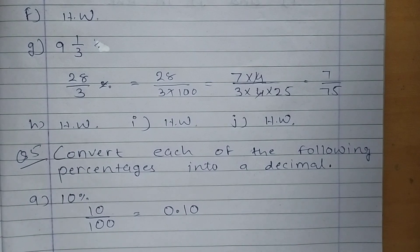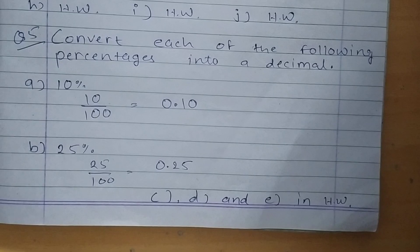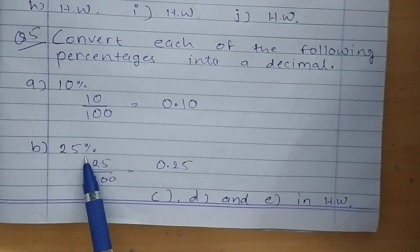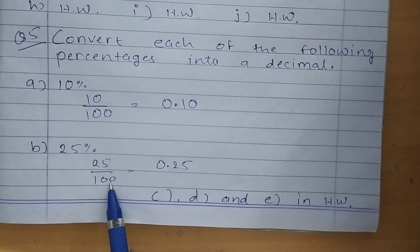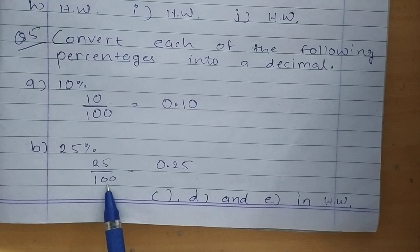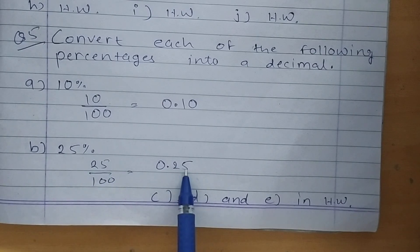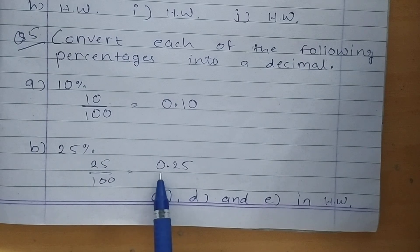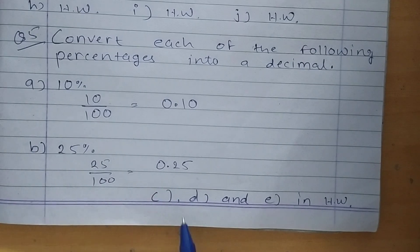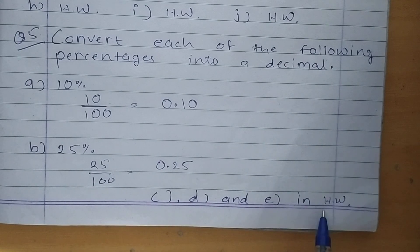Now Part B: 25 percent. 25 upon 100 — in 100 two zeros are there, so put the decimal point after 2 digits: 1, 2, point. So the answer is 0.25. It is so easy. So C, D, and E you have to do in your homework.